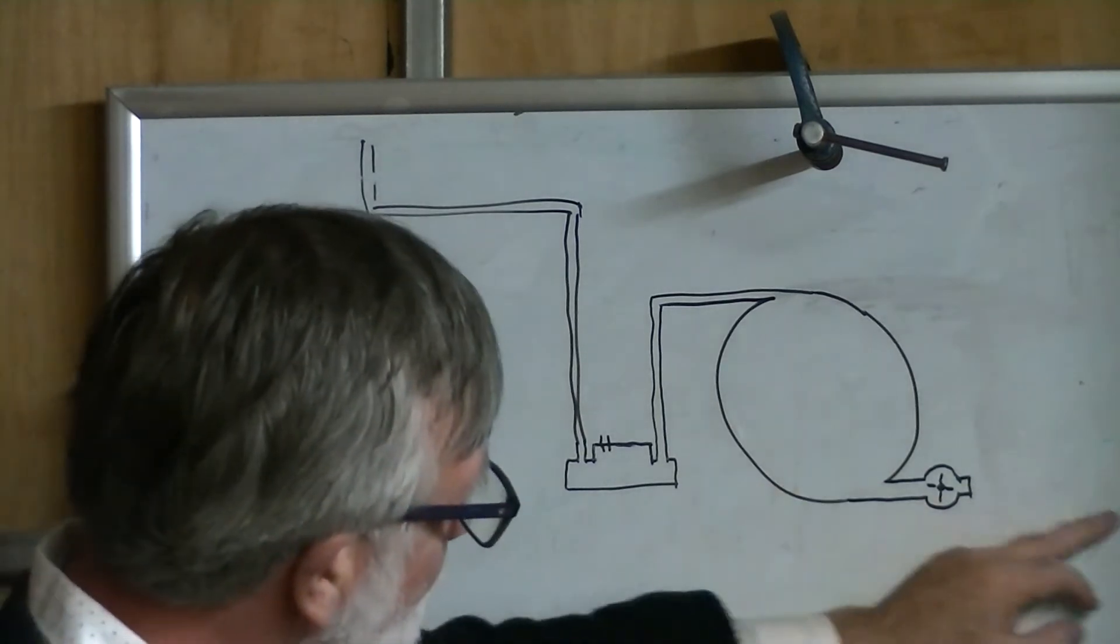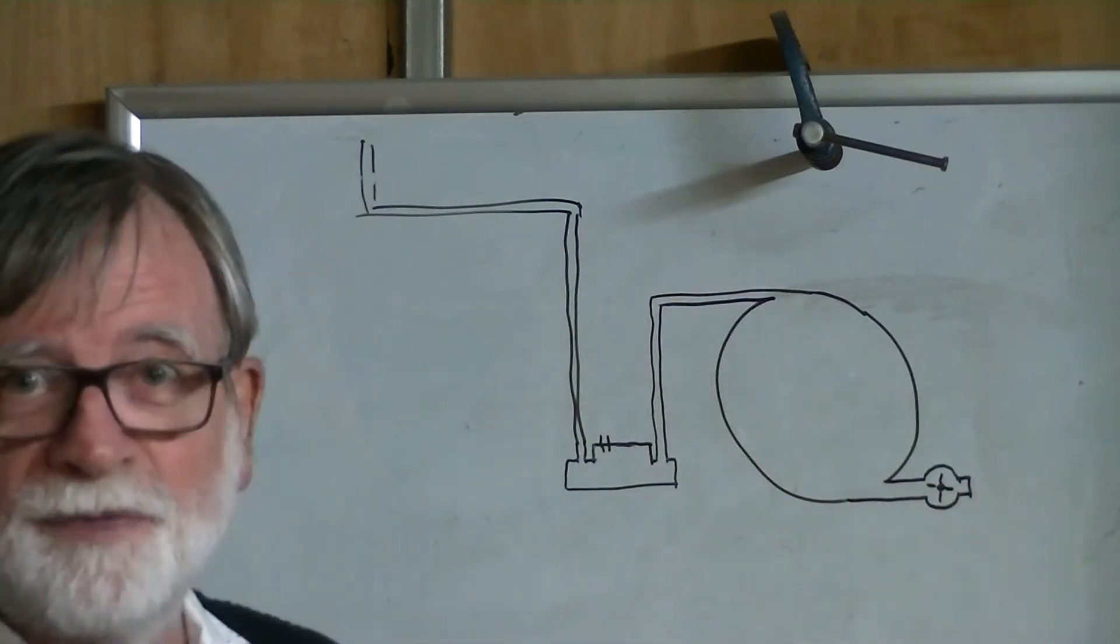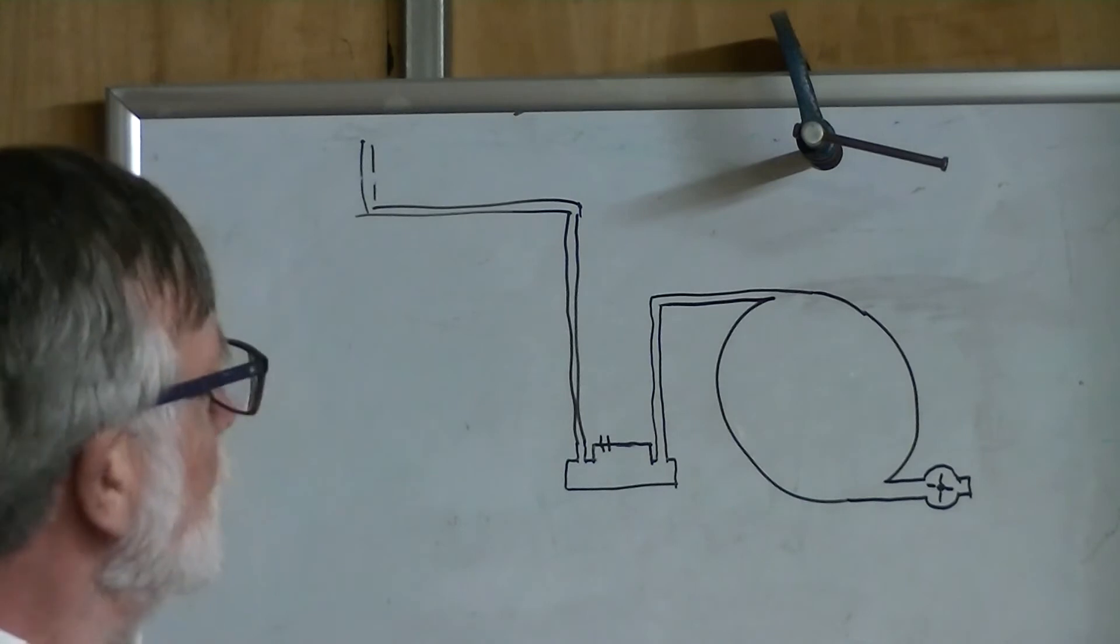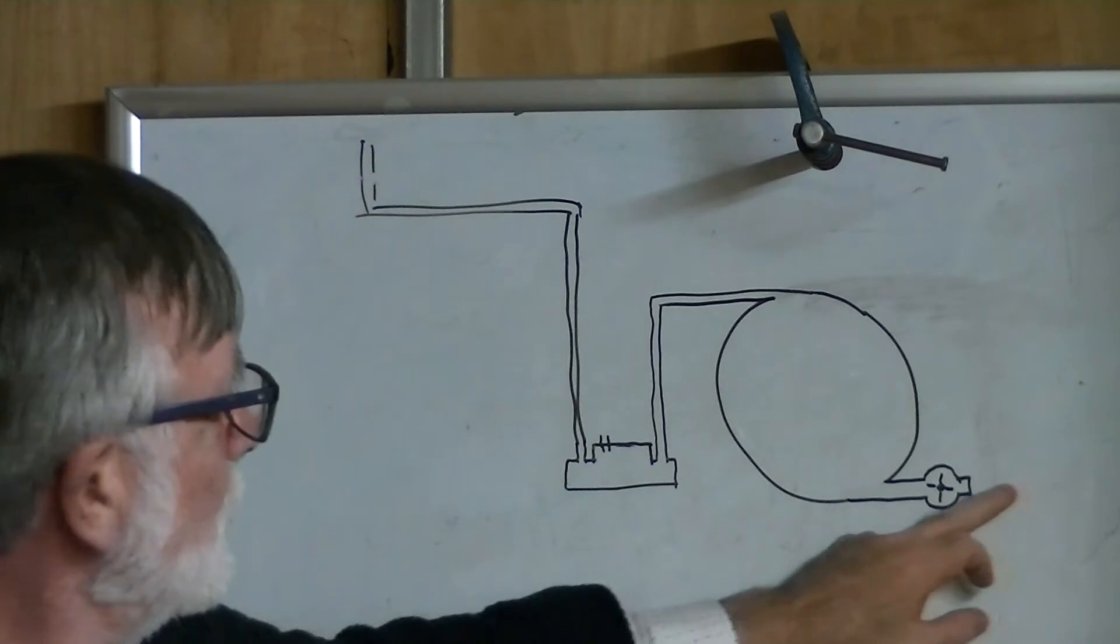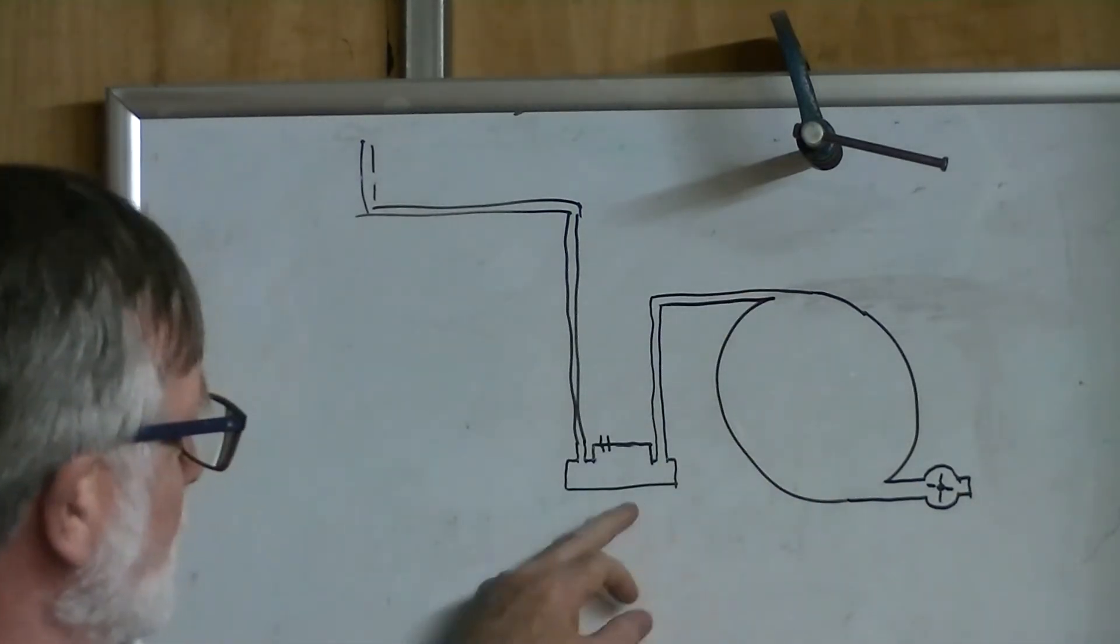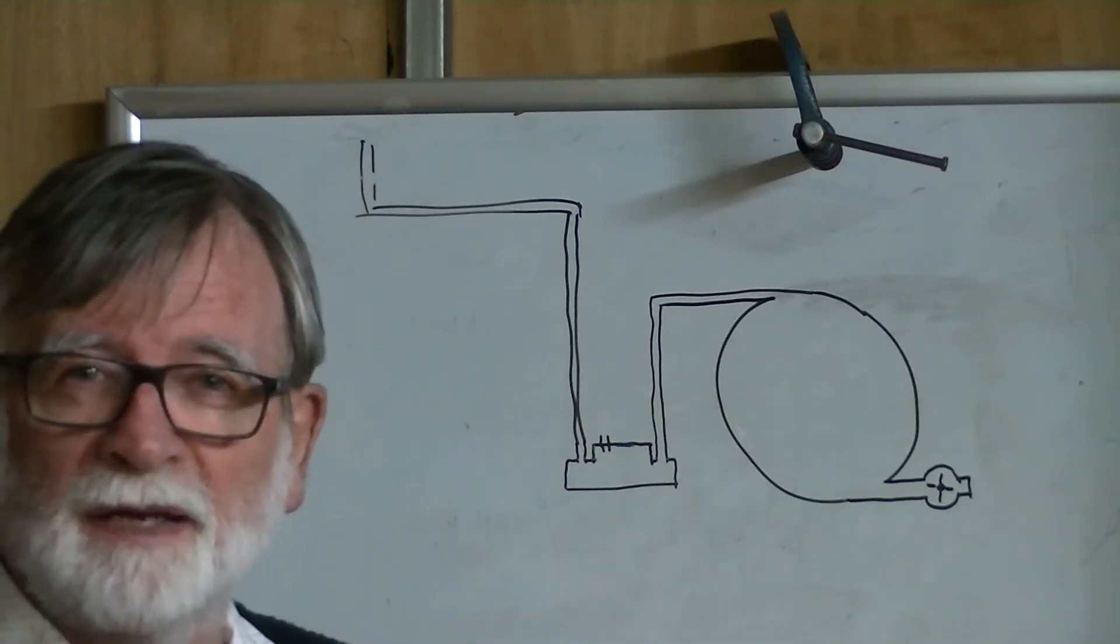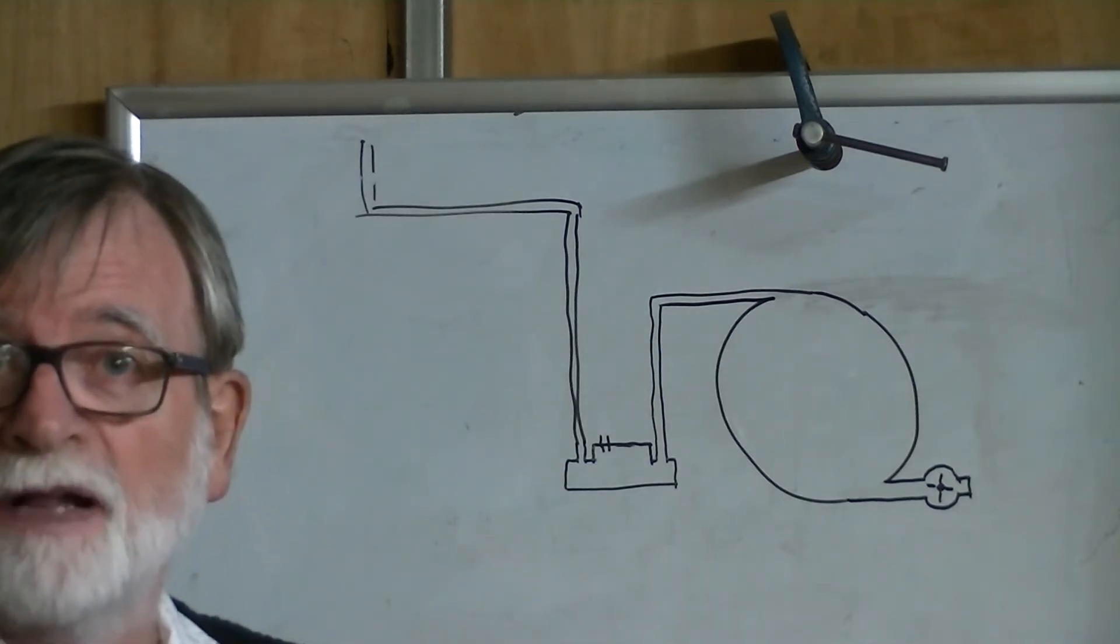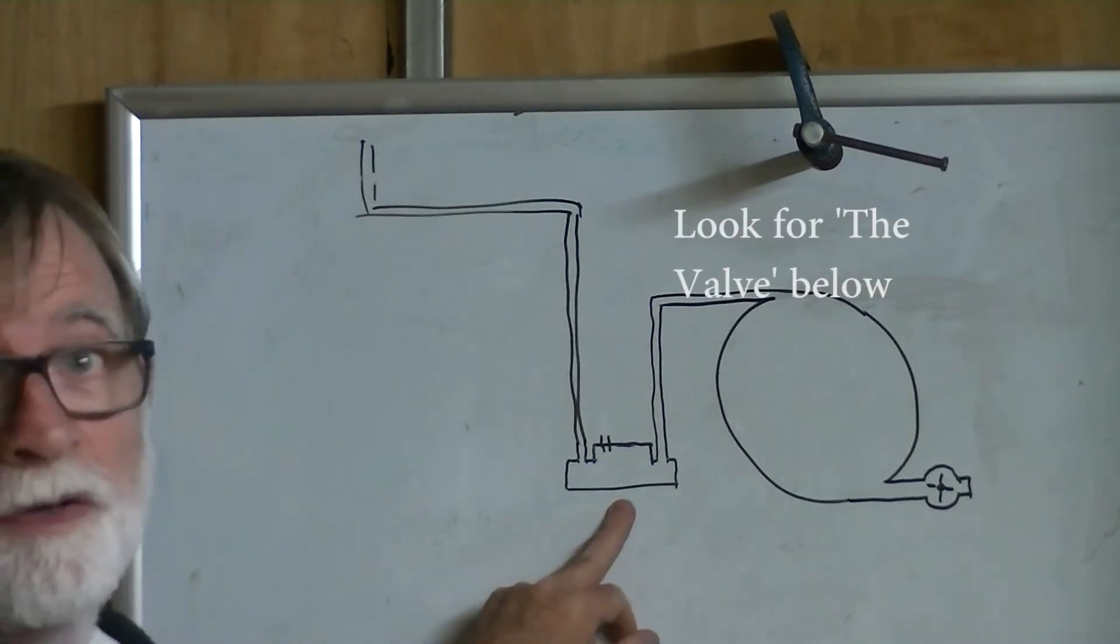When you push the water out it sucks the air in through here and empties the tank. Now for anyone with half a brain you'll look at that and say well that's no good because what happens when you've got it turned off, the water still comes in and fills it up. The answer to that is quite true but this valve solves that problem. I'm not going to try and explain it now but I've got a video on this list called the valve, I made it a long time ago and it explains how this works completely.